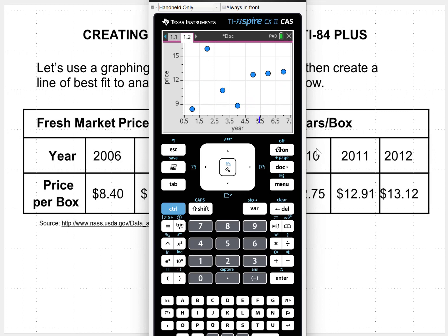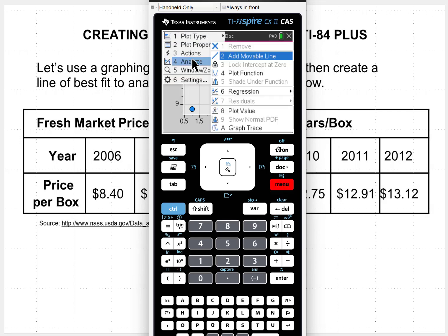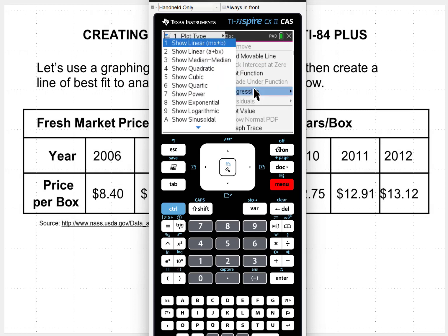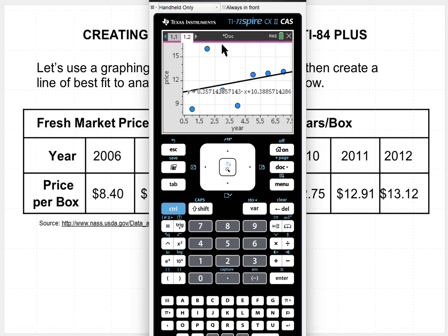So next we want to calculate and analyze for the line of best fit. So we would press menu. And then 4 for analyze. And we want a regression equation. And this should be an mx plus b. So that's number 1. And there you can see our equation. So I've written that down. We're going to go back to our notes here and write our equation down.